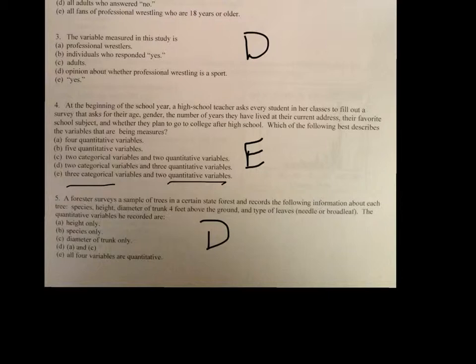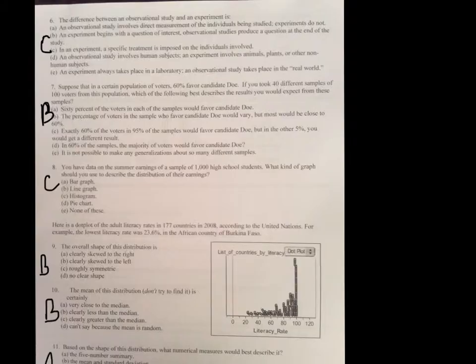On number five, the quantitative variable, so you're just basically having to pick out which ones are quantitative and which ones are categorical. On number six, basically, the biggest difference between observational study and experiment. Remember, an experiment is a specific treatment is imposed. In observational study, no treatment is imposed and there's no interference. You're just observing.